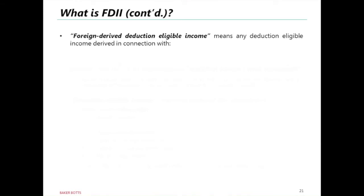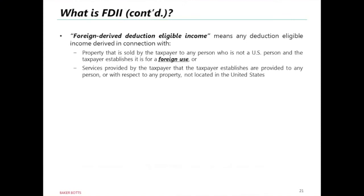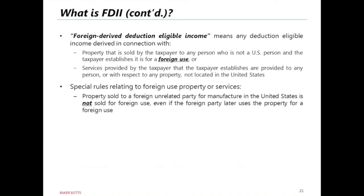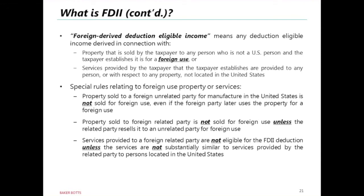The key concept of foreign-derived deduction-eligible income is any deduction-eligible income derived in connection with property sold, leased, or licensed by the corporation to a foreign person for foreign use, or services the corporation provides to any person or property located outside the U.S. Special rules apply: property sold to a foreign unrelated party for U.S. manufacturing is not considered sold for foreign use even if later exported; property sold to a foreign related party is not for foreign use unless the related party resells it to an unrelated party for foreign use; and services provided to a foreign related party don't qualify unless not substantially similar to services provided to persons located in the U.S.